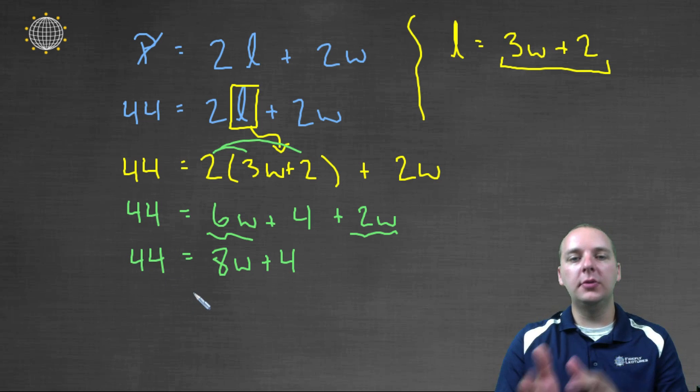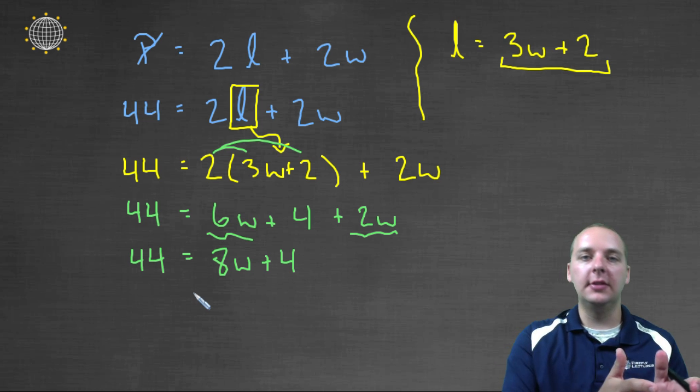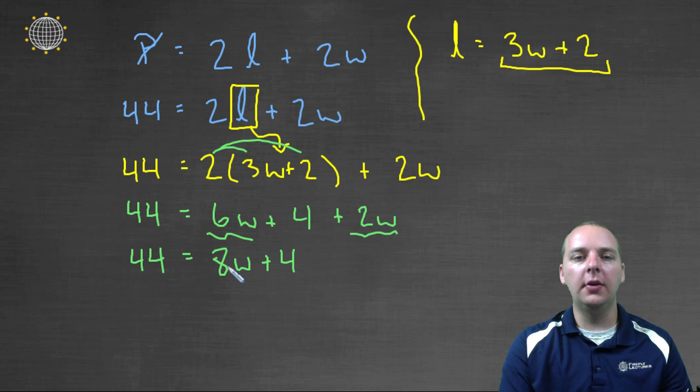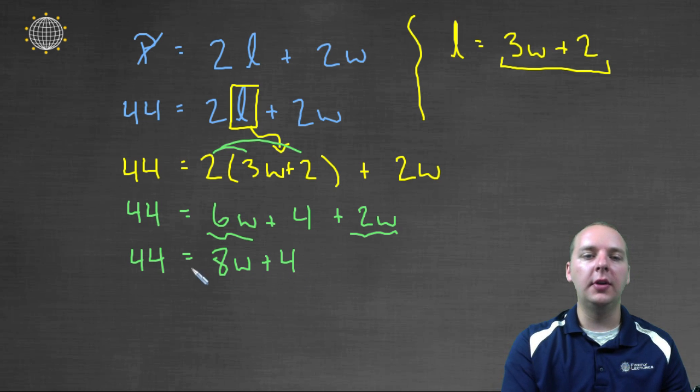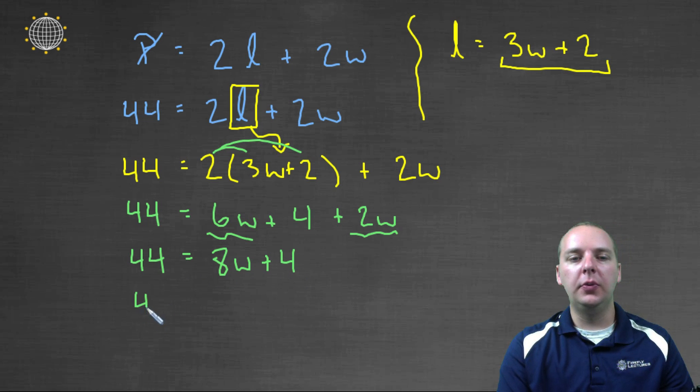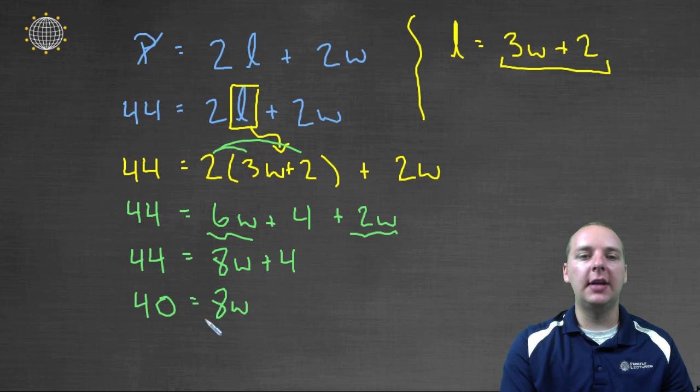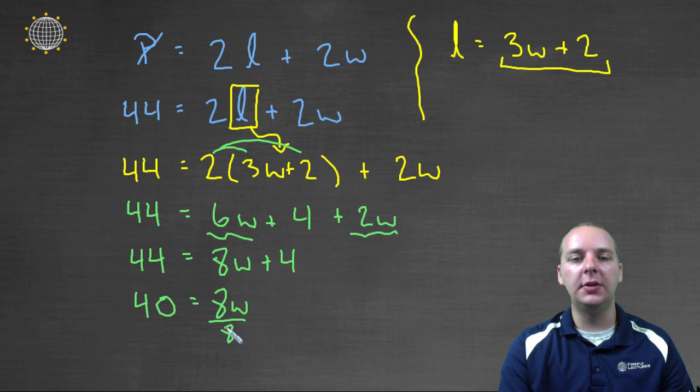We can move the variables to one side and the constants to the other. The W's are already on the right, so we'll leave those on the right. So let's subtract four over to the left, and so we'd get forty equals eight W. And then we'll divide both sides by the variable's coefficient of eight. And so W, the width, would equal five.